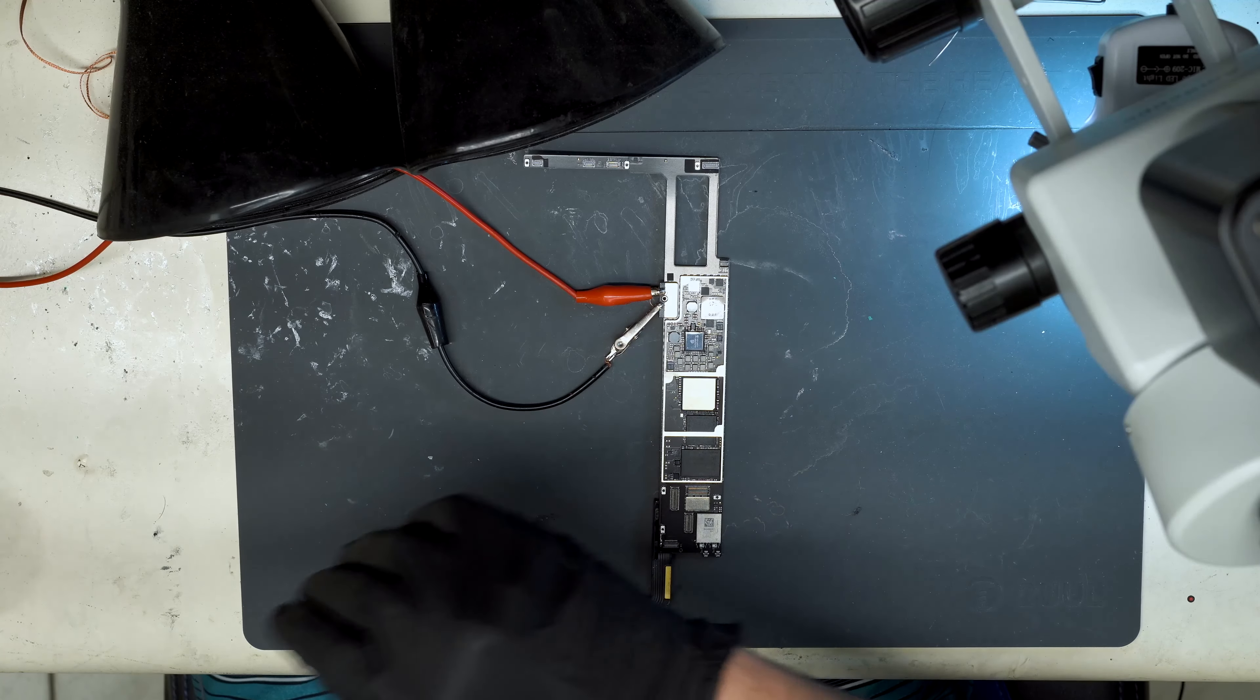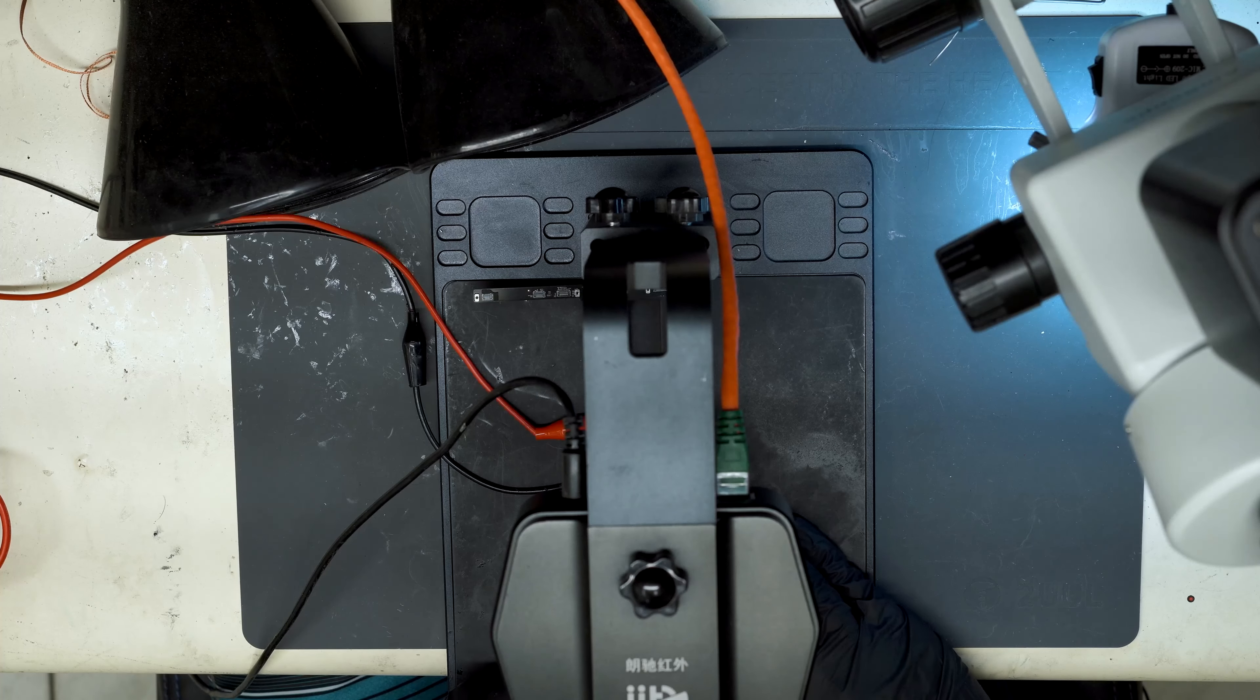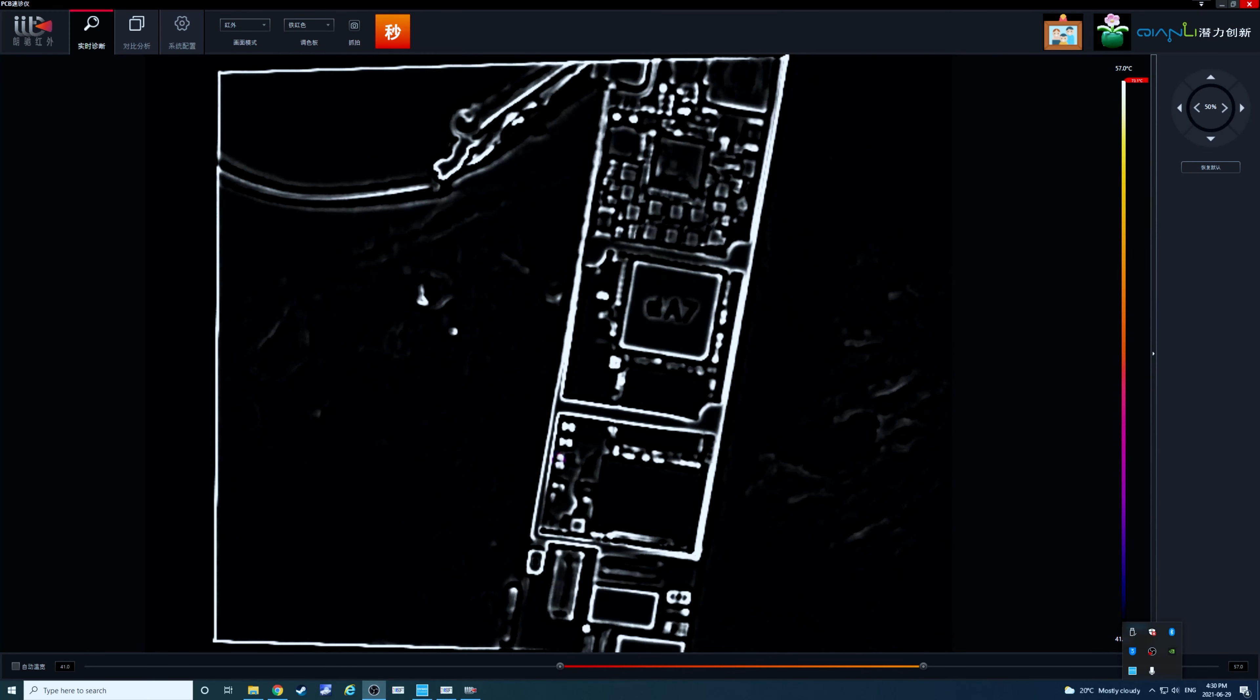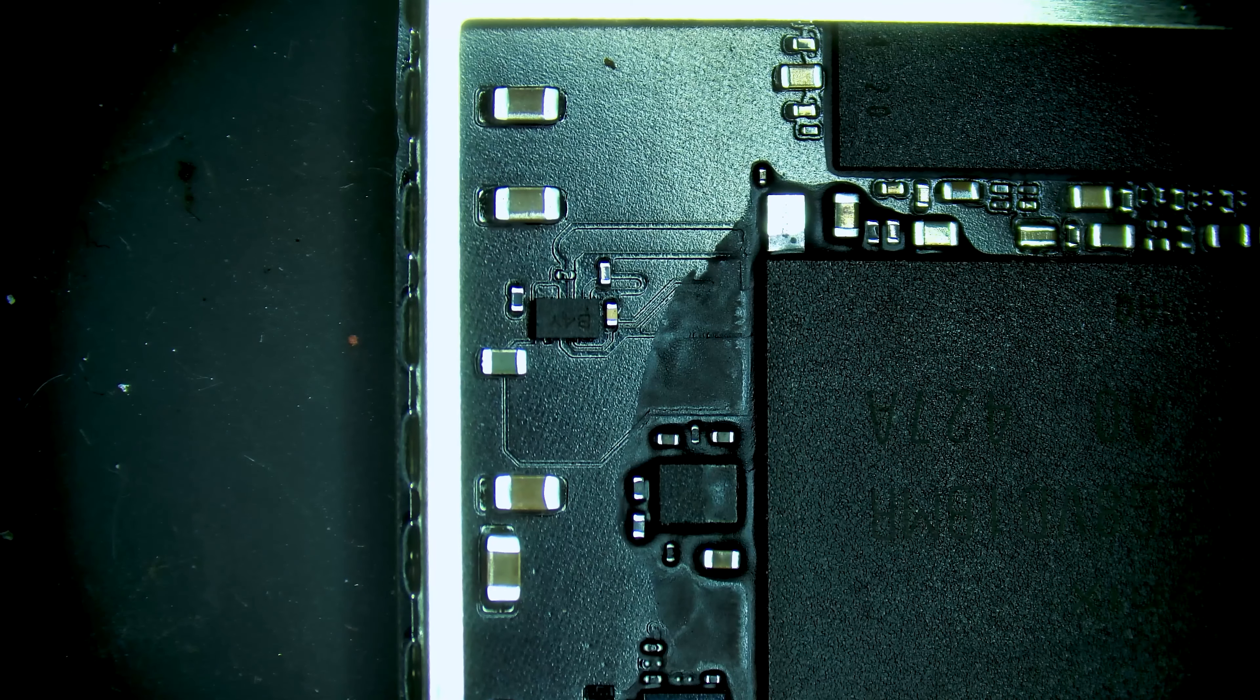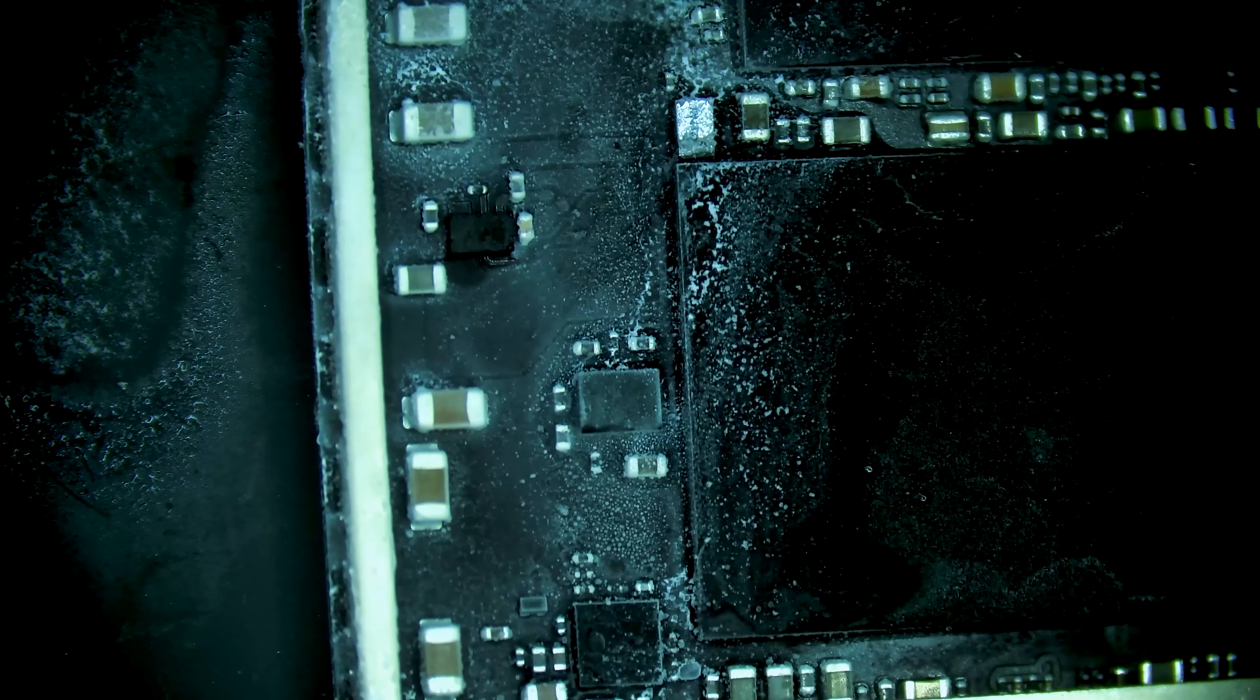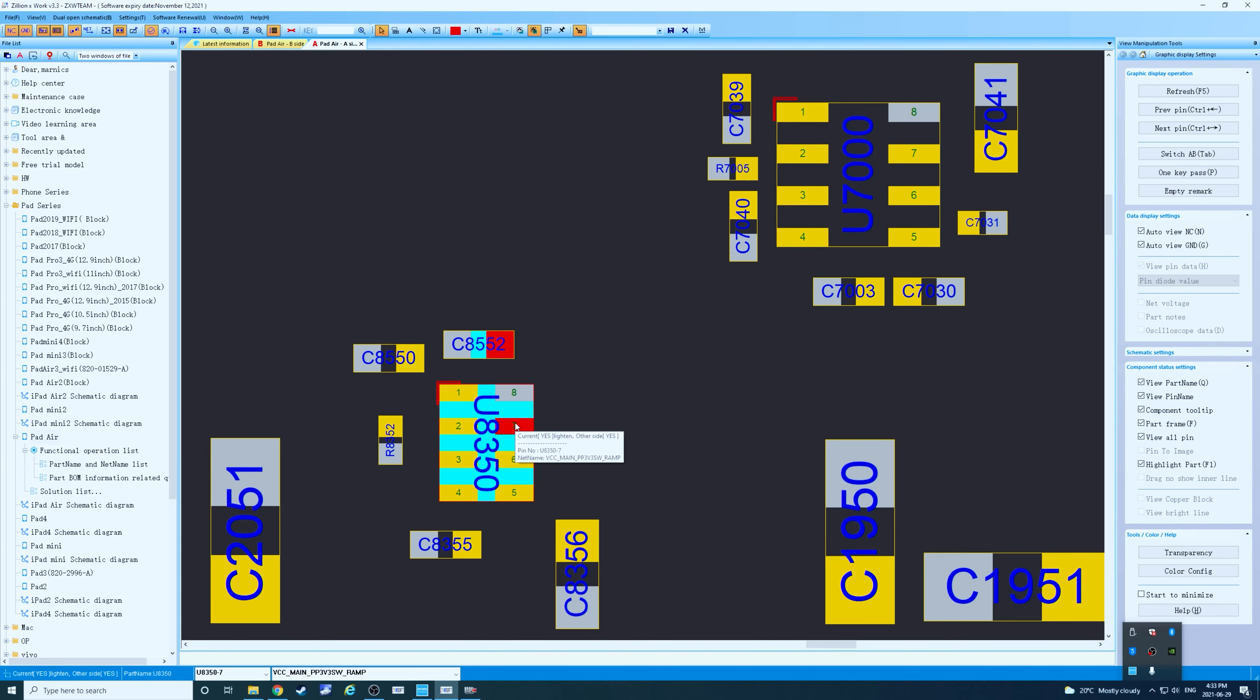We're going to grab thermal view. Place the board under the thermal camera. Enabling our DC power supply and plugging in charger. So we can actually see a section of the board that's heating up here. Looks like we do have a short. Let's grab some freeze spray to see if we can identify the exact component which is the problem. Enabling DC power supply and plugging in power. Right there we've identified the component. U8350 is heating up.